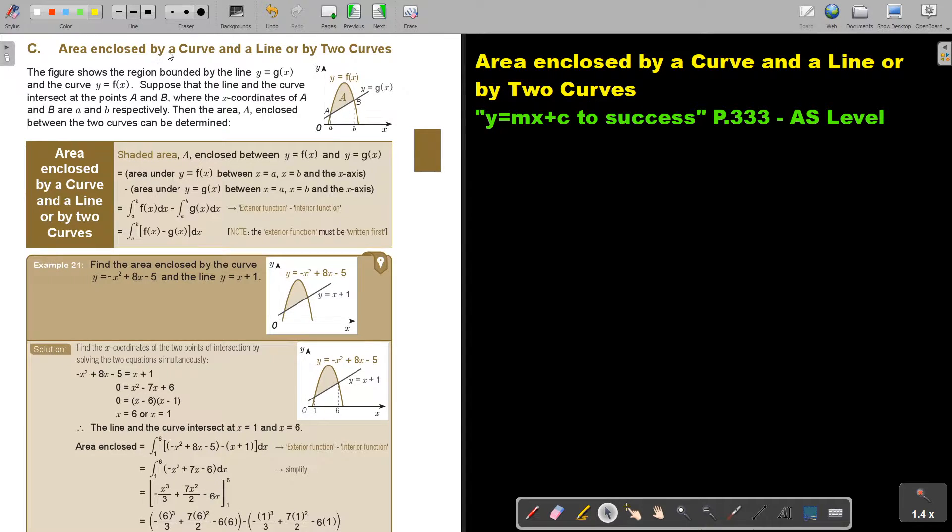Area enclosed by a curve and a line or by two curves. So this is the curve, this is the line. The figure shows the region bounded by the line Y equals GX and the curve Y equals FX. Suppose that the line and the curve intersect at the points A and B where the X coordinates of A and B are A and B respectively. Then the area A enclosed between the two curves can be determined and here's how you do that.